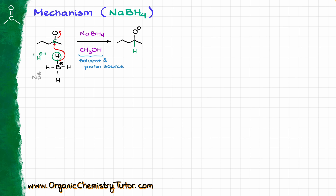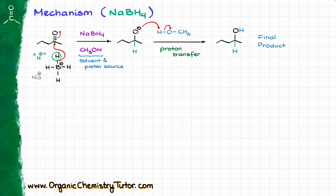Of course, we are not going to keep this alkoxide around, because we have our methanol, and that methanol is going to do the proton transfer, so that is going to be our source of protons. The oxygen is going to come in, grab that proton from our methanol, and as a result, we are going to get the alcohol, which is going to be our final product in this case. Pretty straightforward.